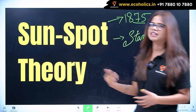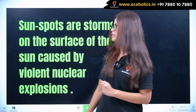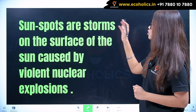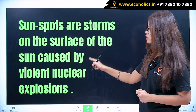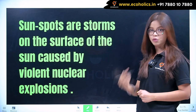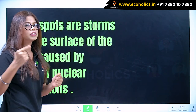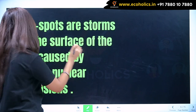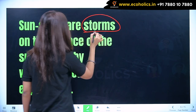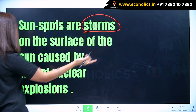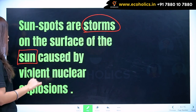What does this theory say? Sunspots are the storms on the surface of the Sun caused by violent nuclear explosions. So the theory is also called the Sunspots theory. Sunspots are storms on the surface of the Sun caused by violent nuclear explosions.